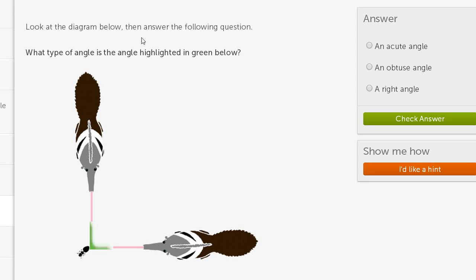Look at the diagram below. Then answer the following question. What type of angle is the angle highlighted in green below?